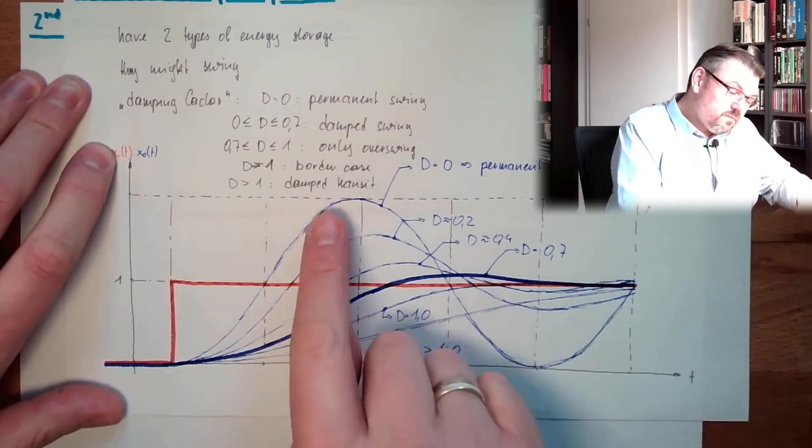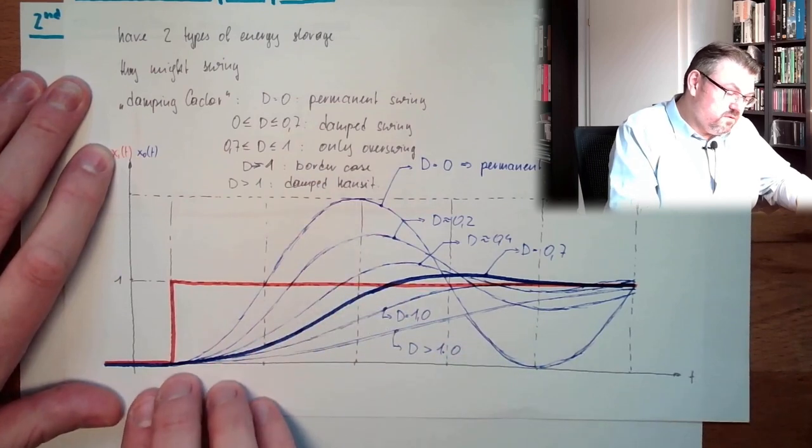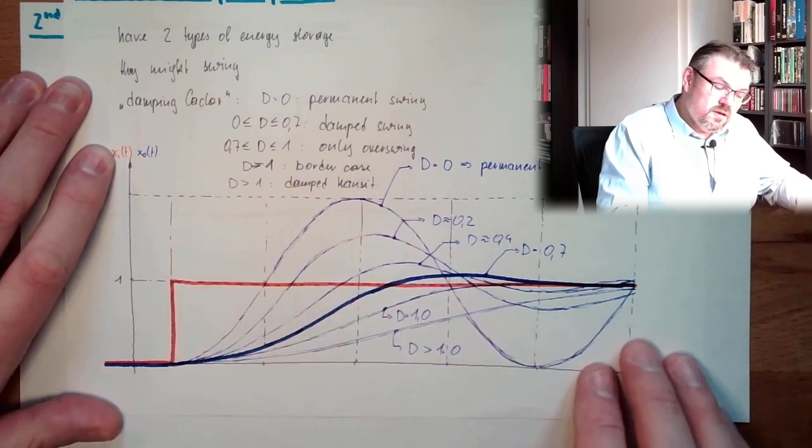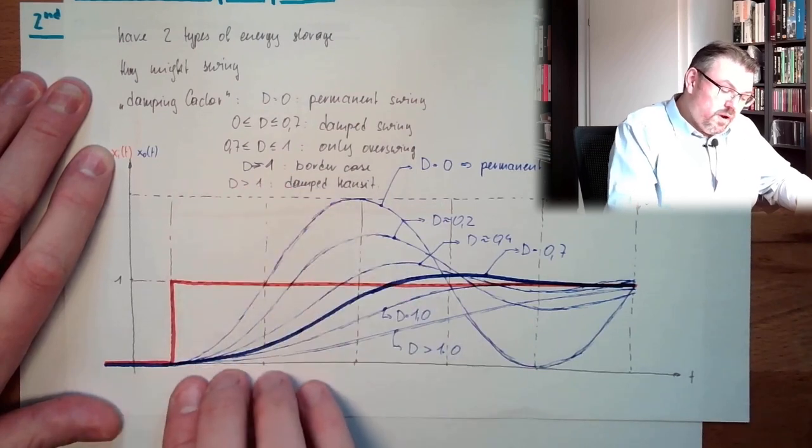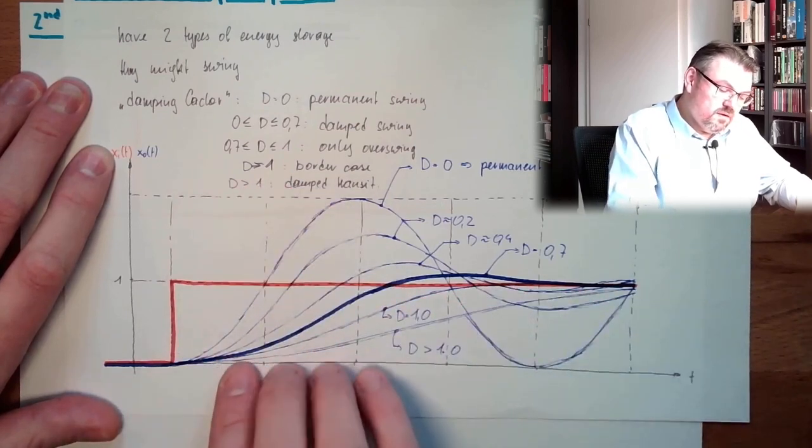And we said, with damping factor zero, permanent swing. With damping factor one, we have this aperiodic thing.